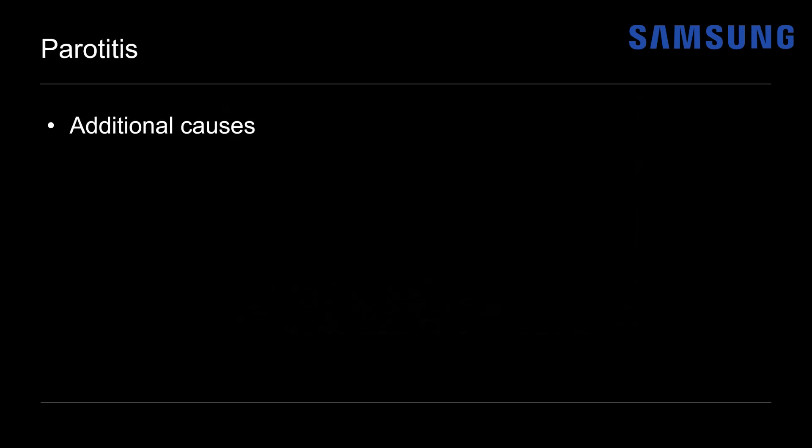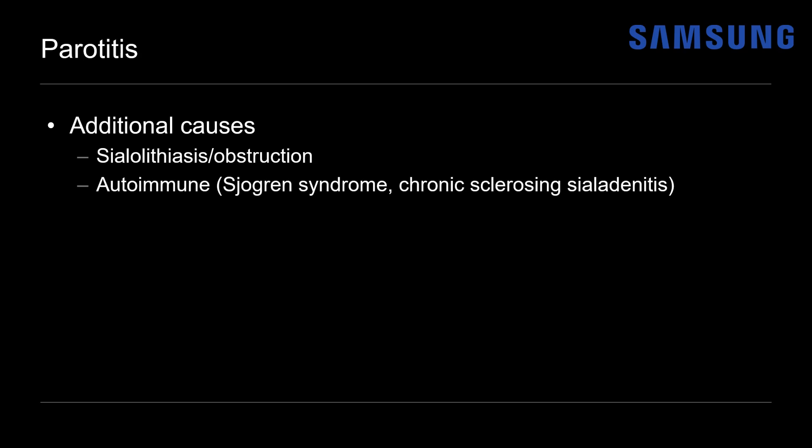Some additional causes of parotiditis that we did not discuss include sialolithiasis, which is stone disease and obstruction. Autoimmune causes like Sjogren's syndrome, which most commonly presents with dry eyes and dry mouth, as well as chronic sclerosing sialoadenitis. Infectious causes in addition to the viral and bacterial causes discussed — HIV and tuberculosis can also cause parotiditis. And sarcoidosis, although that's very rare in children.